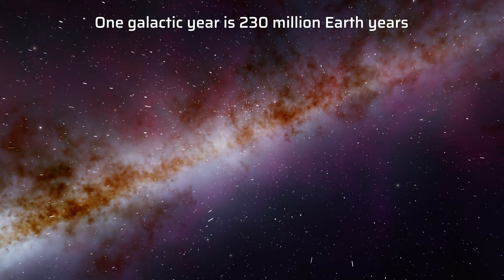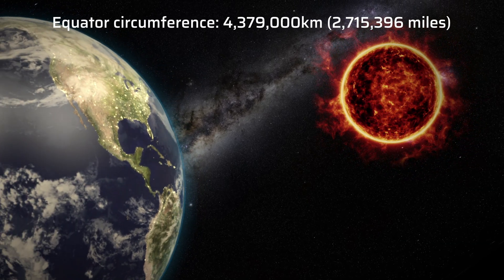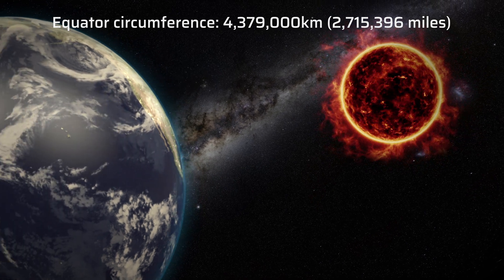It orbits the Milky Way every 230 million Earth years. The sun is so big, it could contain roughly 1.3 million Earths.